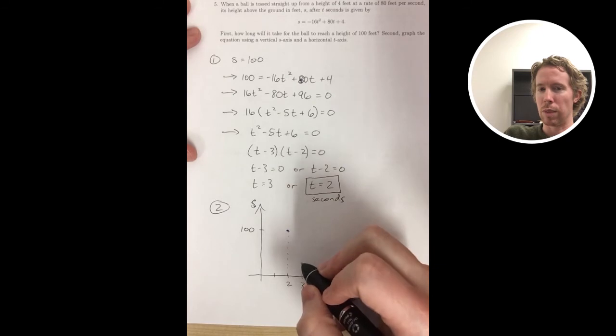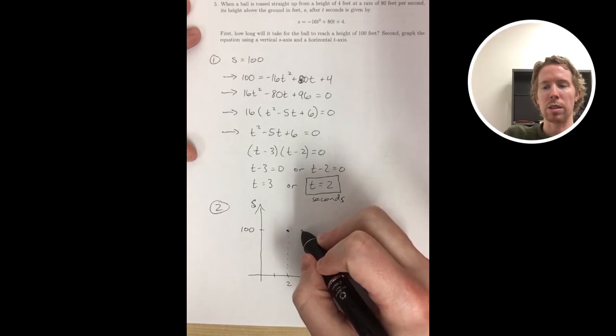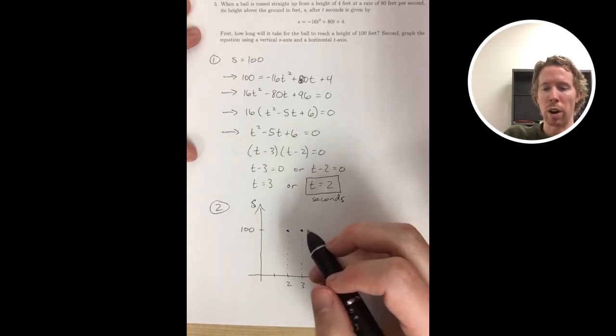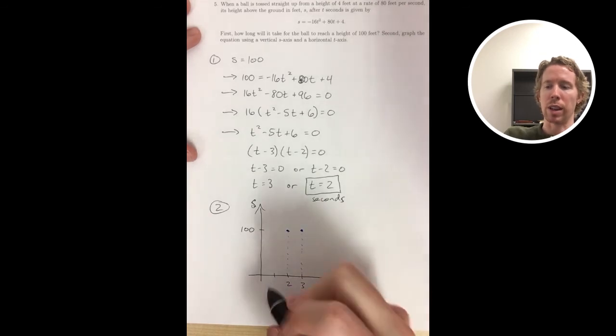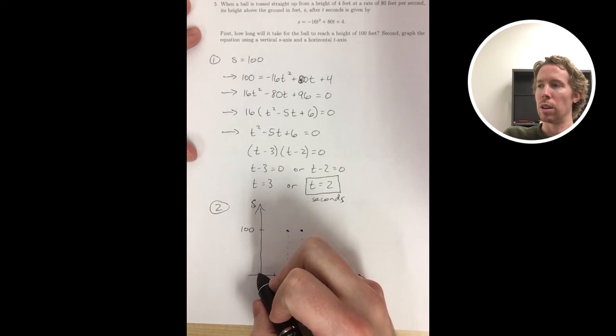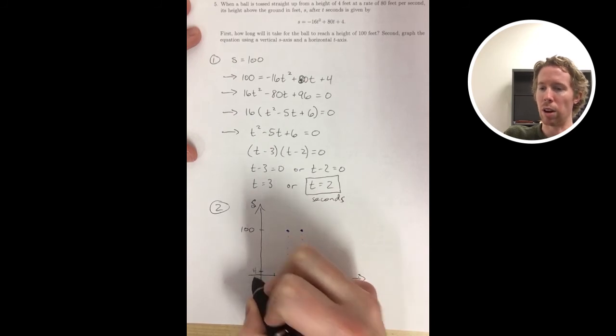And then we'll connect them with a smooth line that makes a parabola. But specifically, since the height is at 100 for t equals 2 and t equals 3, we know that the vertex has to happen halfway between 2 and 3. So the vertex will happen at 2.5 seconds. I just want to make it look like that when I'm sketching the graph.